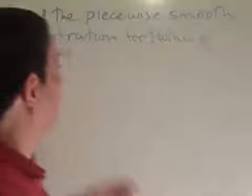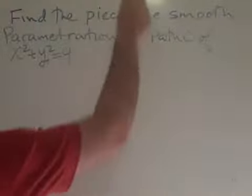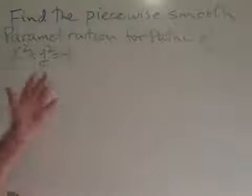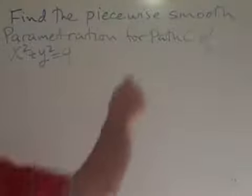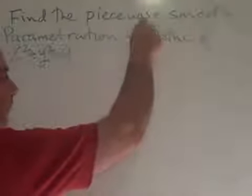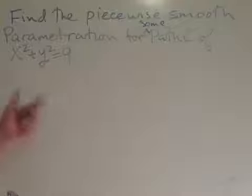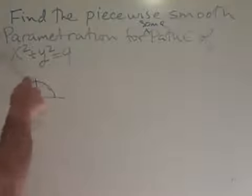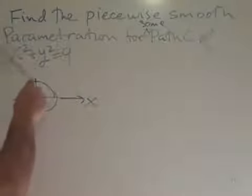That way you get right into it. Suppose you were asked to find the piecewise smooth parametrization for some path C where x squared plus y squared equals 9. We need to figure out what it is. x squared plus y squared equals 9, well that's just a simple circle centered at the origin of radius 3.